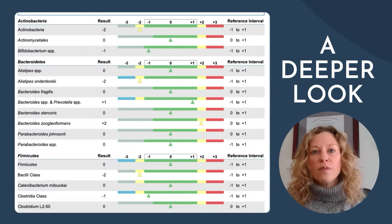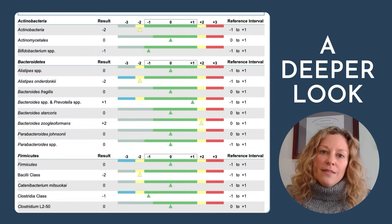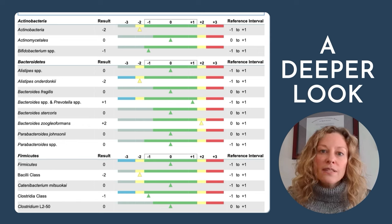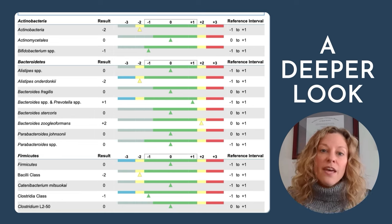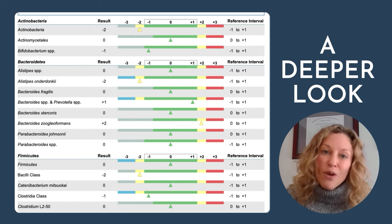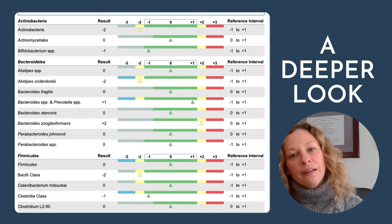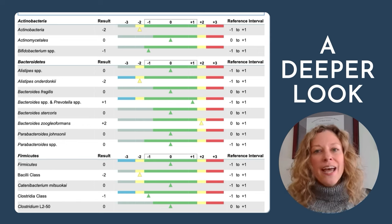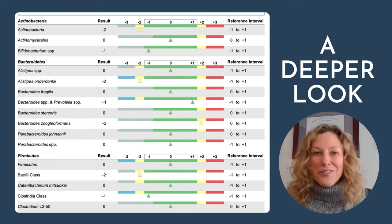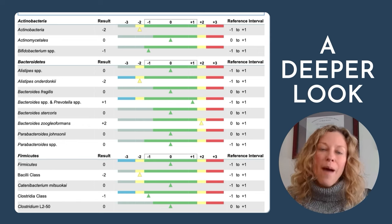A deeper look using comprehensive panels allows us to assess a wide variety of markers, combining PCR, culture methods, biochemical assays, and microscopy to detect pathogens including viruses, parasites, and bacteria. It's important if you're going to run a panel like this with patients that you go through it thoroughly with them, because there's a lot of information, and if it isn't explained well, they can get really overwhelmed or worry about one or two markers that might be elevated or low. It's really about the whole picture — the whole balance of the microbiome.